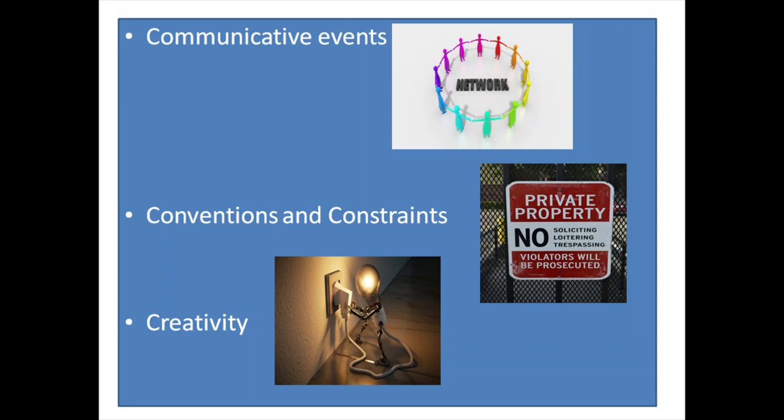Now next point is conventions and constraints. So genres are about getting things done. The way they are structured and the kinds of features that they contain are largely determined by what people want to do with them. Now the kinds of information I might include in a job application, for example, would be designed to convince a prospective employer that I am the right person for the job. So this information would probably not include my grandmother's recipe for chocolate brownies or my opinion about coronavirus. Genres then come with some built-in constraints as to what kinds of things they can include and what kinds of things they cannot, based on the activity they are trying to accomplish.